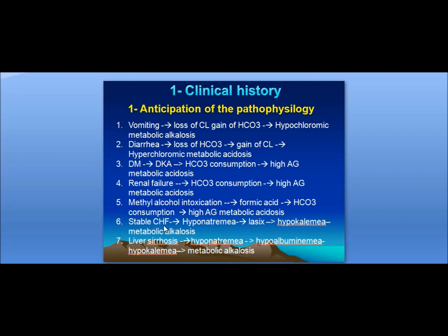In stable congestive heart failure, the patient will have hyponatremia and may be on diuretics like furosemide, developing hypokalemic metabolic alkalosis. Liver cirrhosis patients will have hyponatremia, hypoalbuminemia, and hypokalemia, and may develop metabolic alkalosis.